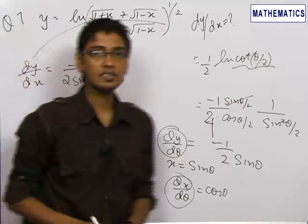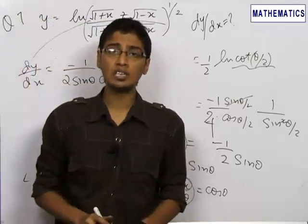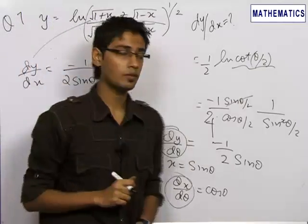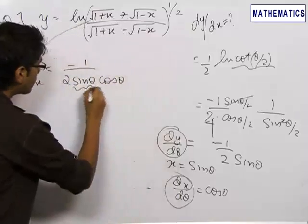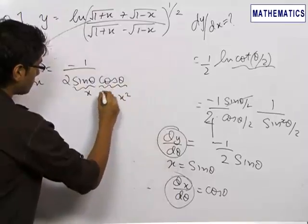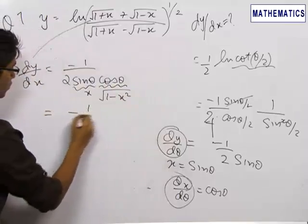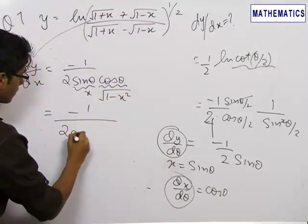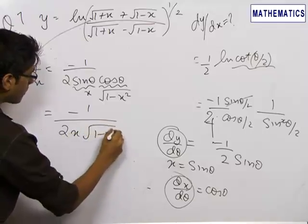Now we need to give the final answer in terms of x and not in terms of θ, because θ was an assumed variable. We know sin θ is equal to x, so cos θ will be equal to √(1-x²). So final answer will be equal to minus 1/(2x√(1-x²)).